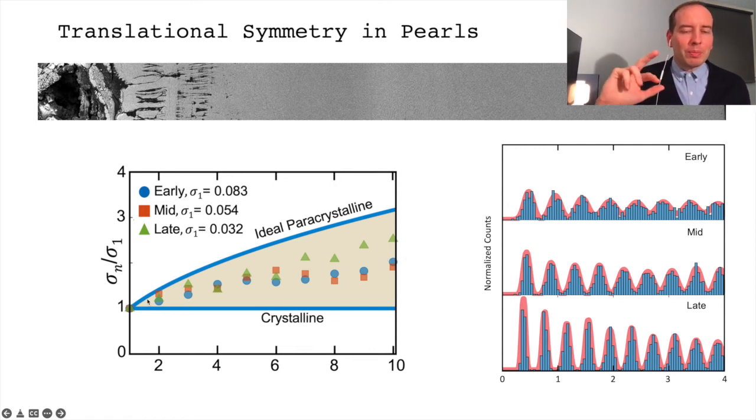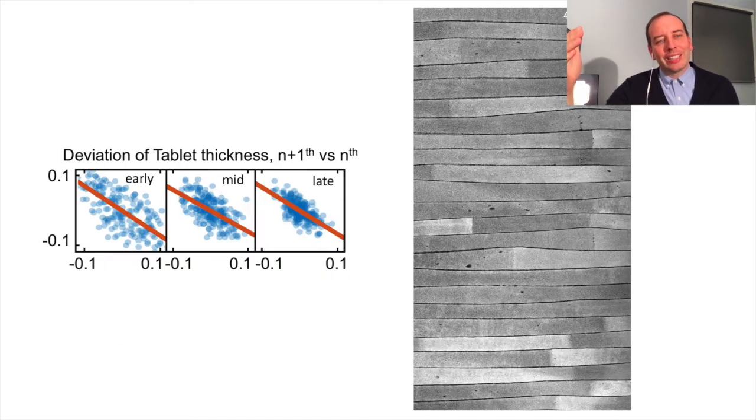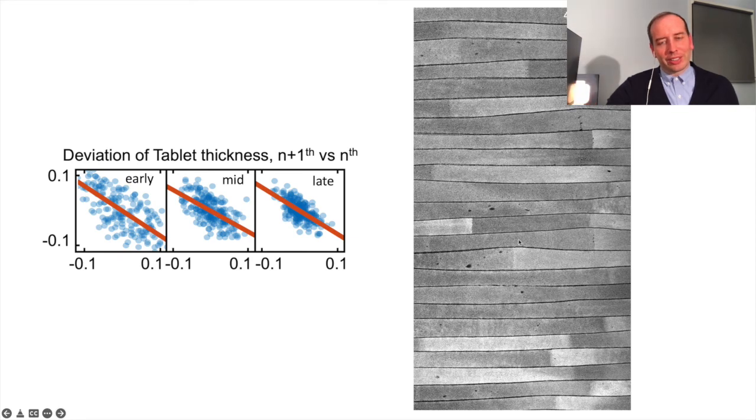If we look at correlations between adjacent layers, we find that they do anti-correlate. That is, when one layer tends to be thick, the other layer tends to be thin. This self-correcting mechanism is at play during the synthesis of these nacre layers.